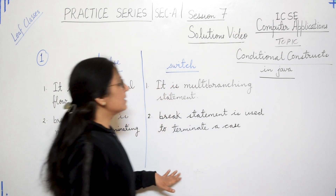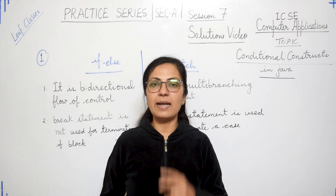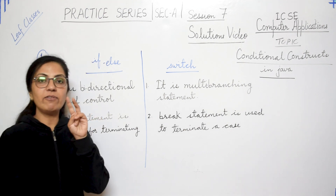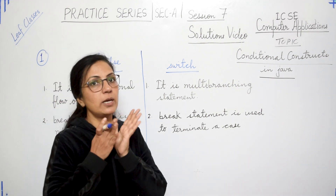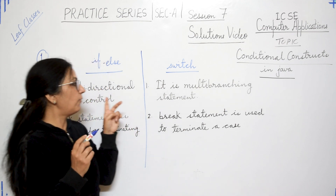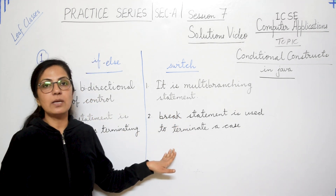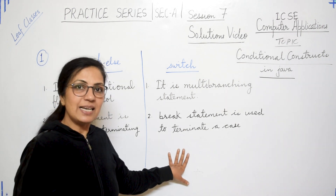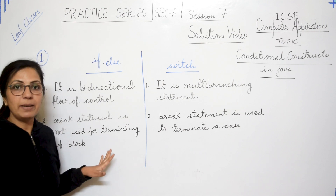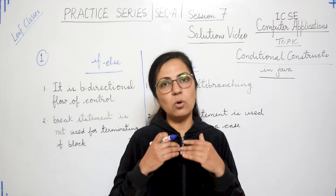Let's begin with Question 1: differentiate between if-else and switch. In conditional constructs, if-else is a bi-directional flow of control — 'bi' means two, so if the condition is true it moves one direction, otherwise another. Switch is a multi-branching flow of control. In switch, we use the break statement as the case terminator — the last line of the case block is always break. In if, no break statement is used to terminate the block.